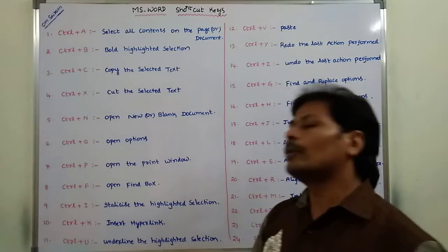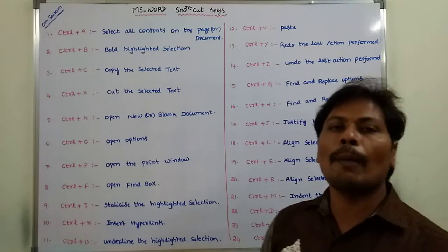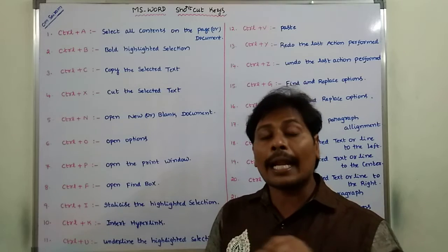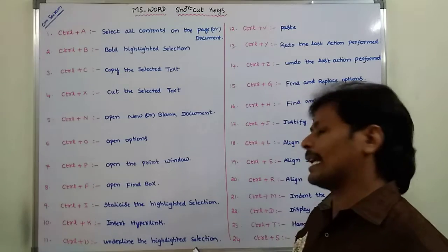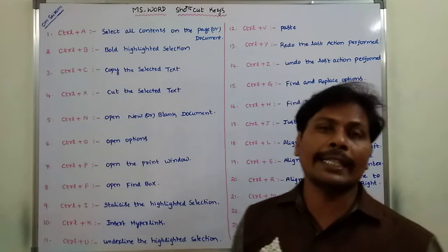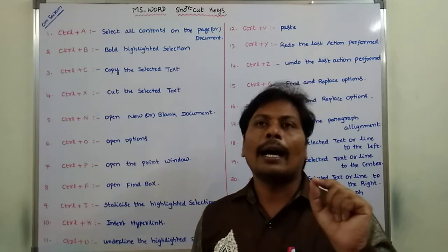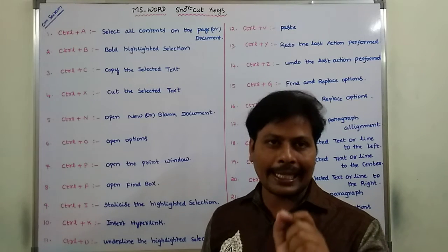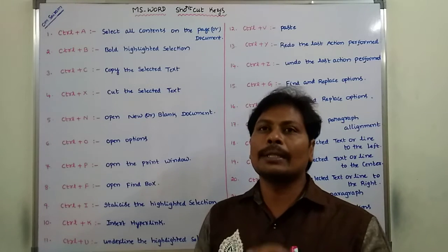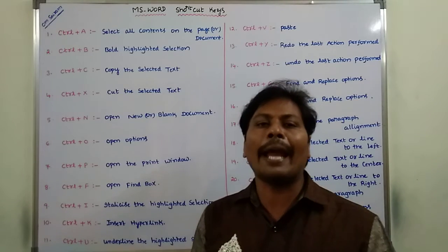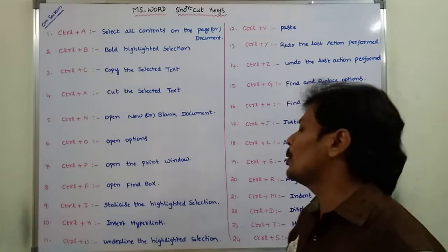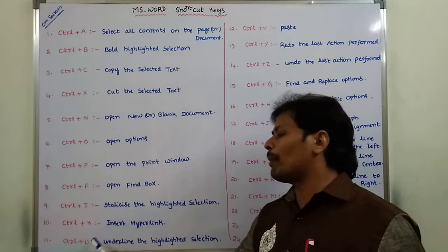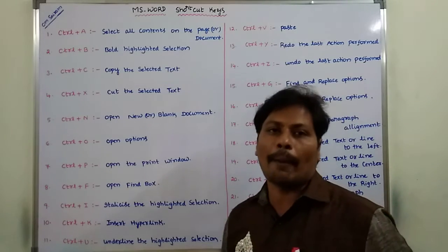Next is Ctrl plus U. This command is used to underline the highlighted selection. Whatever text we have selected, that text can be underlined using the Ctrl plus U command.